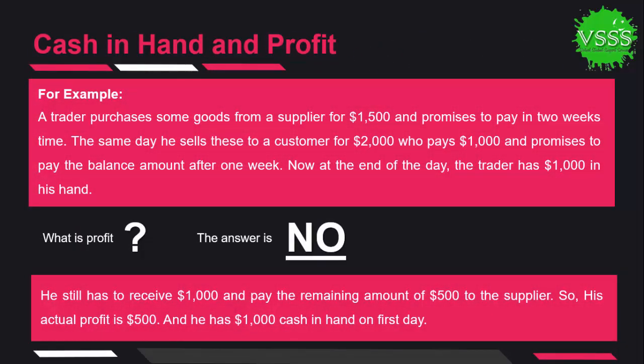The last point we discuss today is the difference between cash in hand and profit. For better understanding, consider this example: a trader purchases goods from a supplier for fifteen hundred dollars and promises to pay in two weeks. The same day he sells these goods to a customer for two thousand dollars, who pays one thousand dollars immediately and promises to pay the remaining balance after one week.